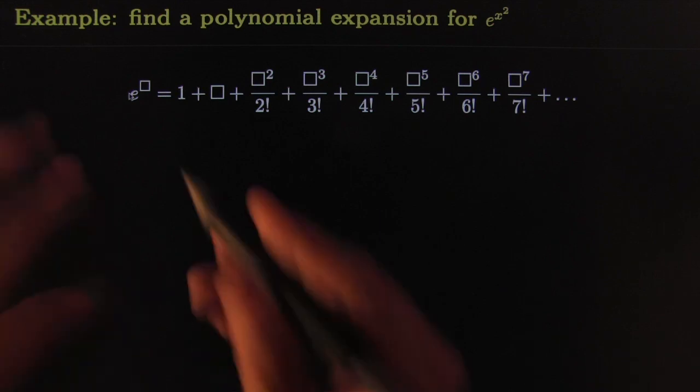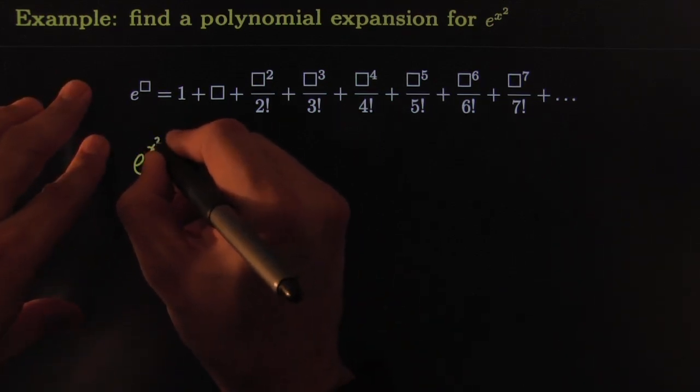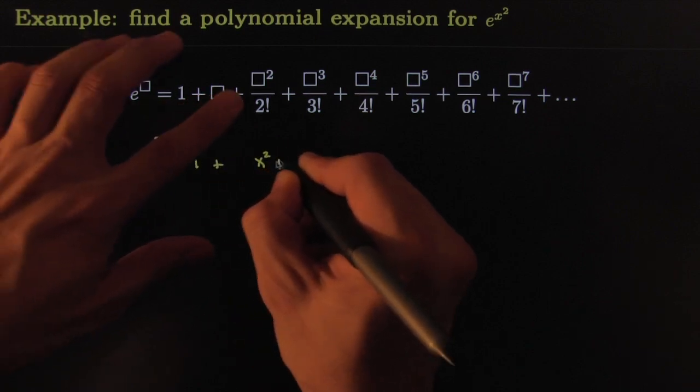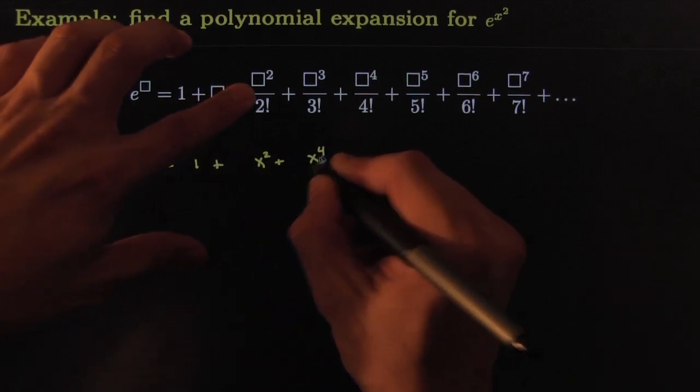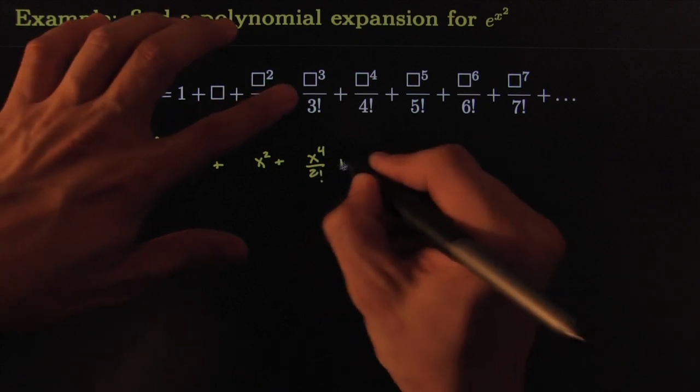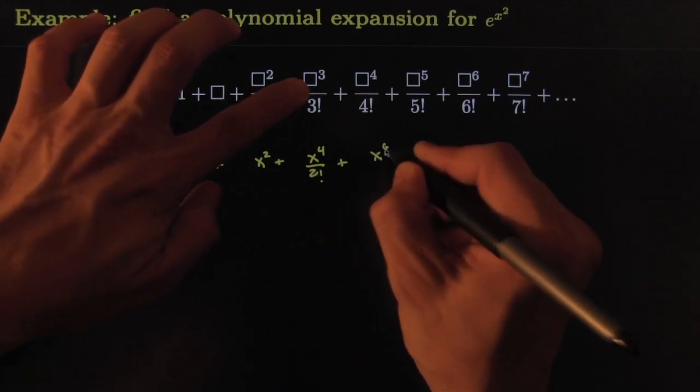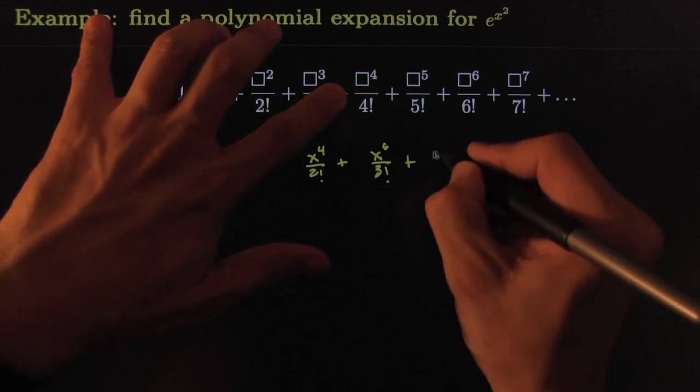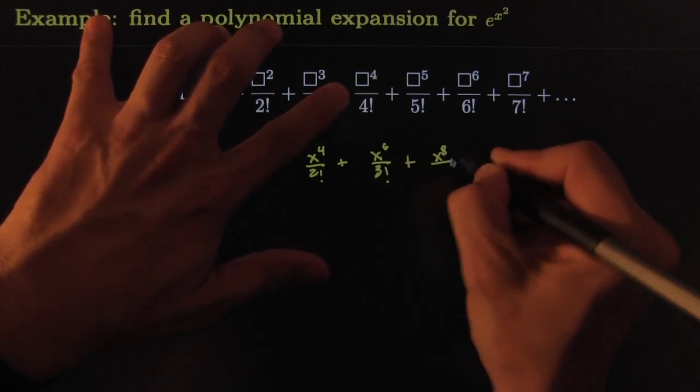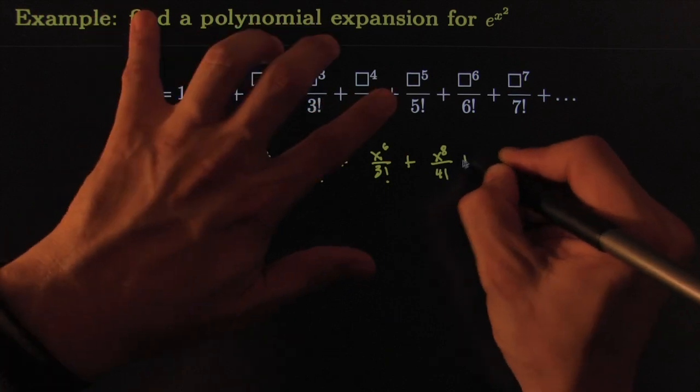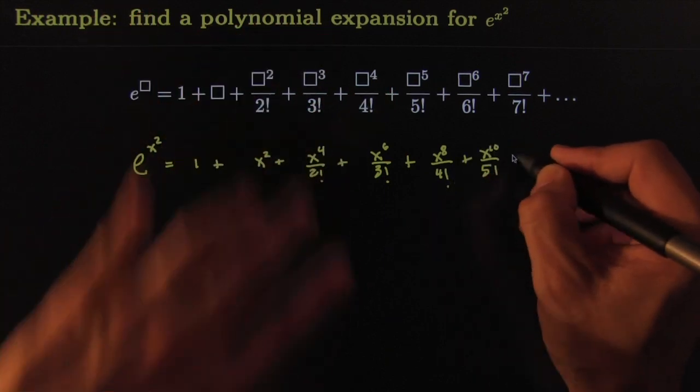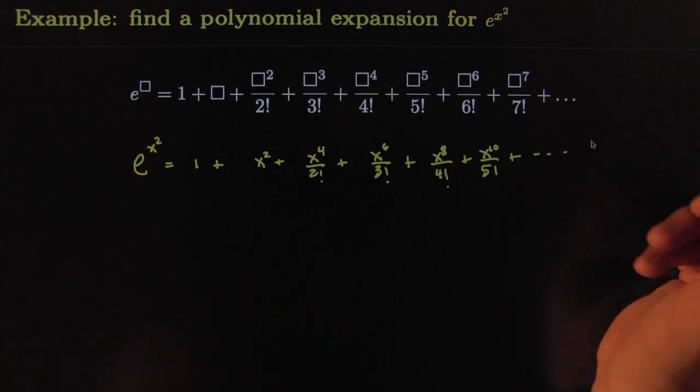I would get that e to the x square is equal to 1 plus x square plus x to the 4th over 2 factorial plus x to the 6th because I have x squared to the 3rd over 3 factorial plus x to the 8th over 4 factorial plus x to the 10th over 5 factorial and so on and so forth.